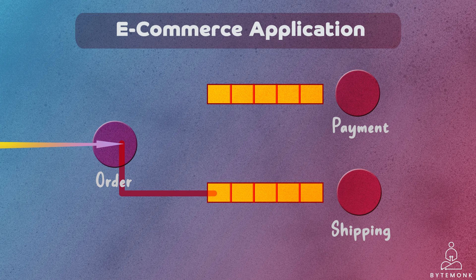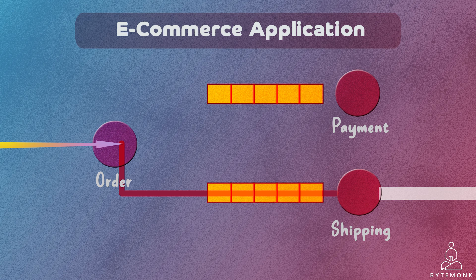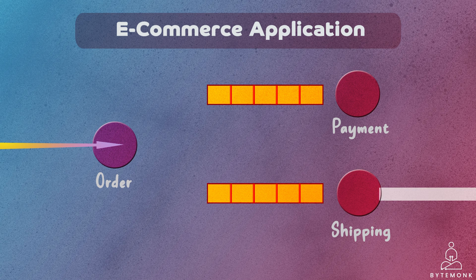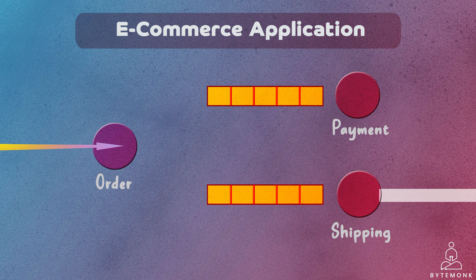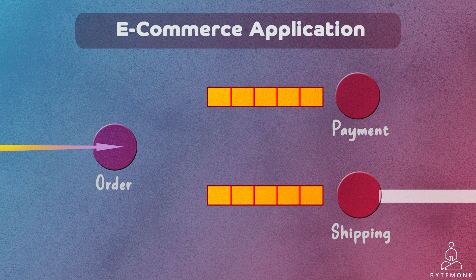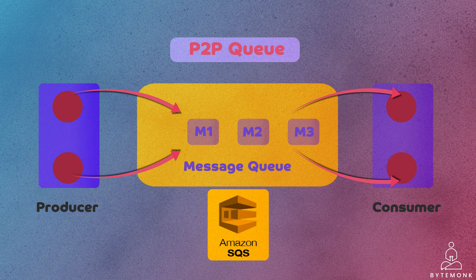Similarly, the order service enqueues another message into the shipping service's queue containing the necessary order information. The shipping service dequeues the message, retrieves the order details, and initiates the shipping process. In this P2P model, each microservice has its own dedicated SQS queue, and messages flow directly from the sender to the intended receiver. SQS enables direct communication between microservices, providing asynchronous one-to-one communication, ensuring each message is consumed by the intended receiver, contributing to the overall resilience and scalability of the system.